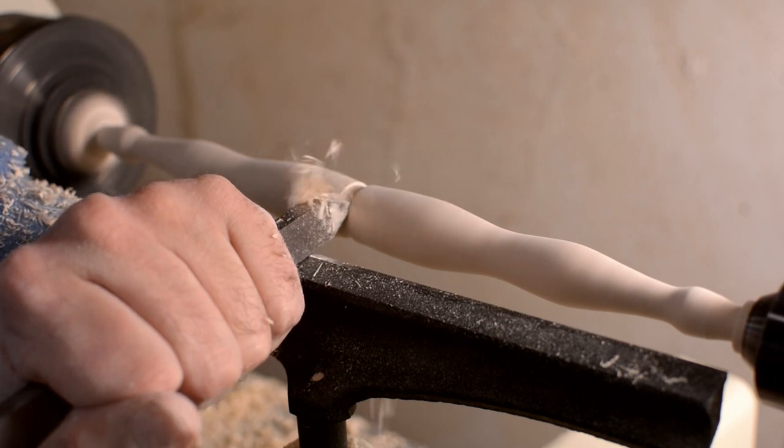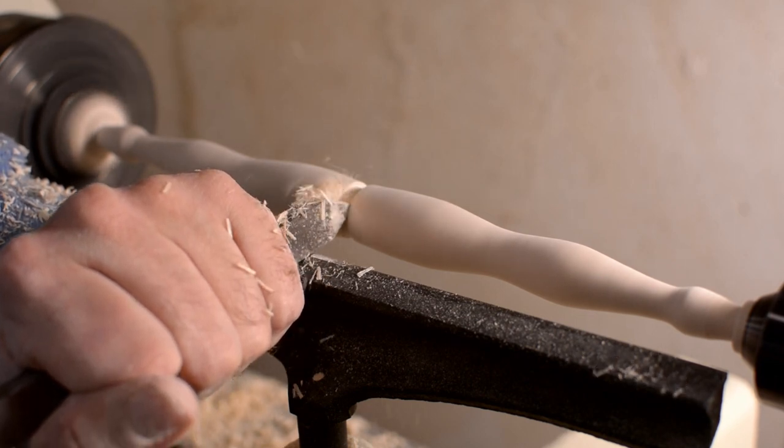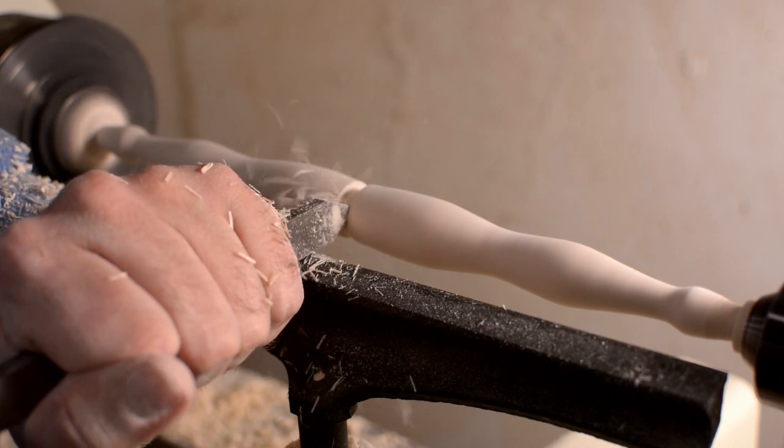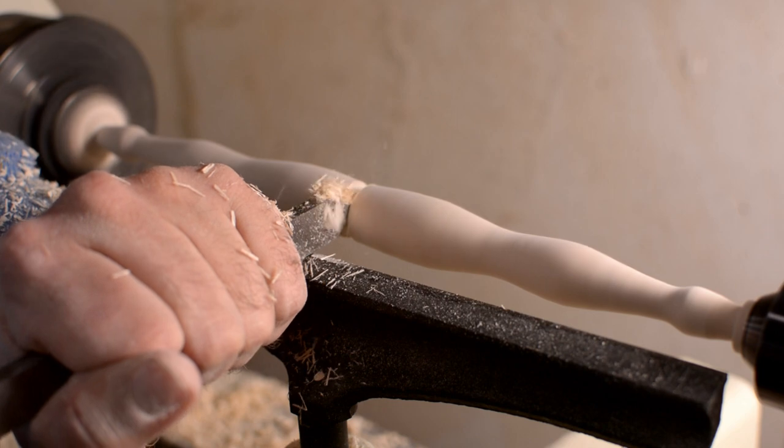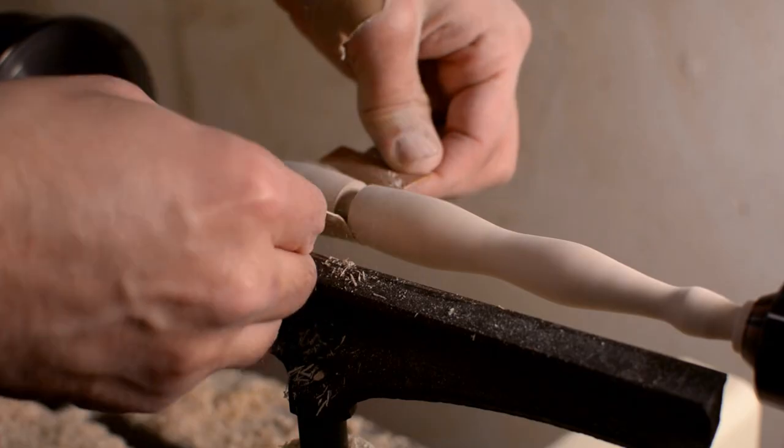For the legs, or a straight pair of arms, it's easier to turn them together on one longer blank, so you can see both of them at the same time. Though I should have had the feet coming together in the middle, so it'd been easier to get them to be the same.